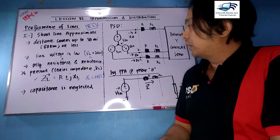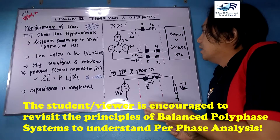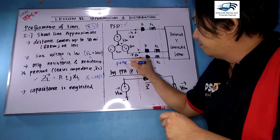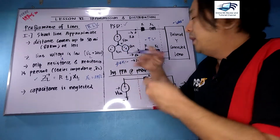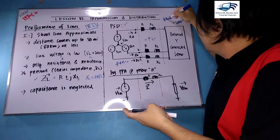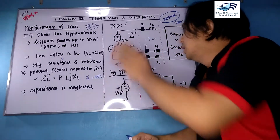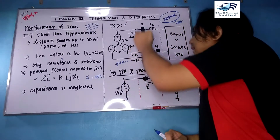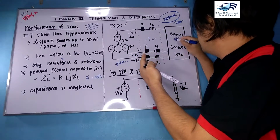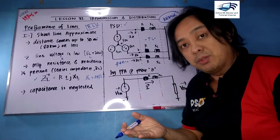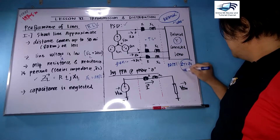To represent a short line approximate we use the power system diagram (PSD), which is composed of generation, transmission line, and load. When considering performance of lines, we assume all lines are balanced — equal magnitude sources, 120 degrees apart, and equal impedances. The connected load must be converted to Y for per-phase analysis. To get Z-Y from a delta-connected balanced load, you divide by 3.